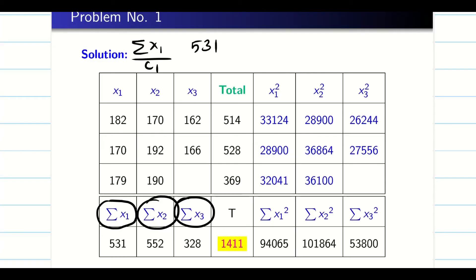1, 2, 3, it is going to be 3. For summation X₂ by c₂, it is going to be 552 and we have three elements again here. The count is 3. But for summation X₃, when you see here, it is going to be 328. I have only two elements here, so I will put 2.